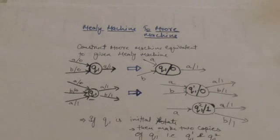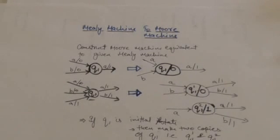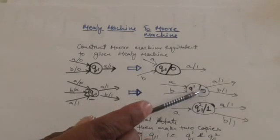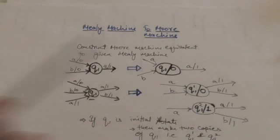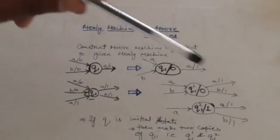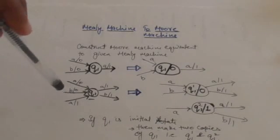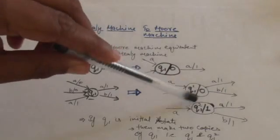Different incoming edges are labeled by different output symbols. In this case, I will make two copies of the Q1 state when transforming into a Moore machine state. With one copy I will associate output symbol 0, and with the other I will associate output symbol 1. Those incoming edges labeled by output symbol 0 will go to the first state, and those labeled by output symbol 1 will go to the second state.